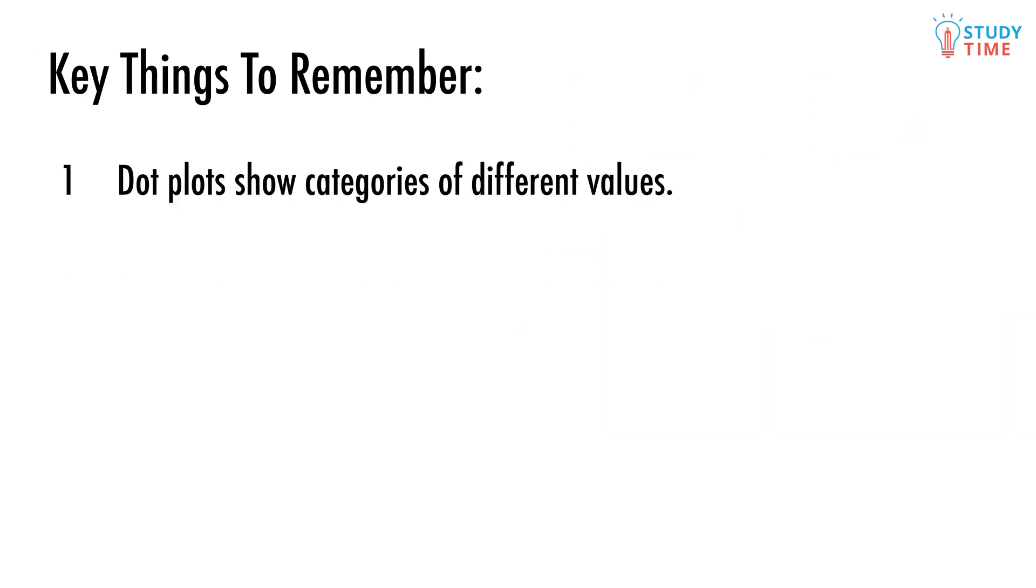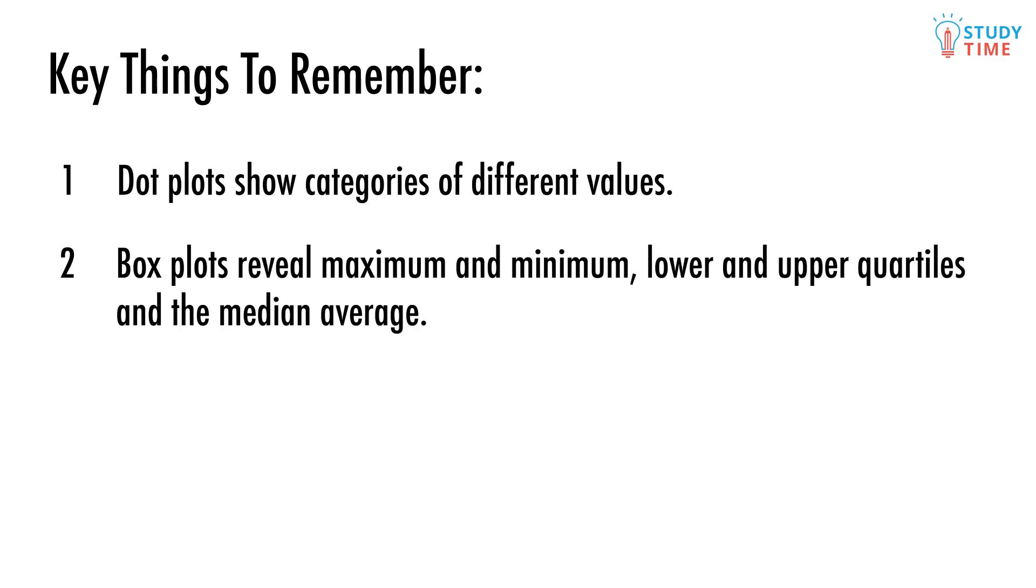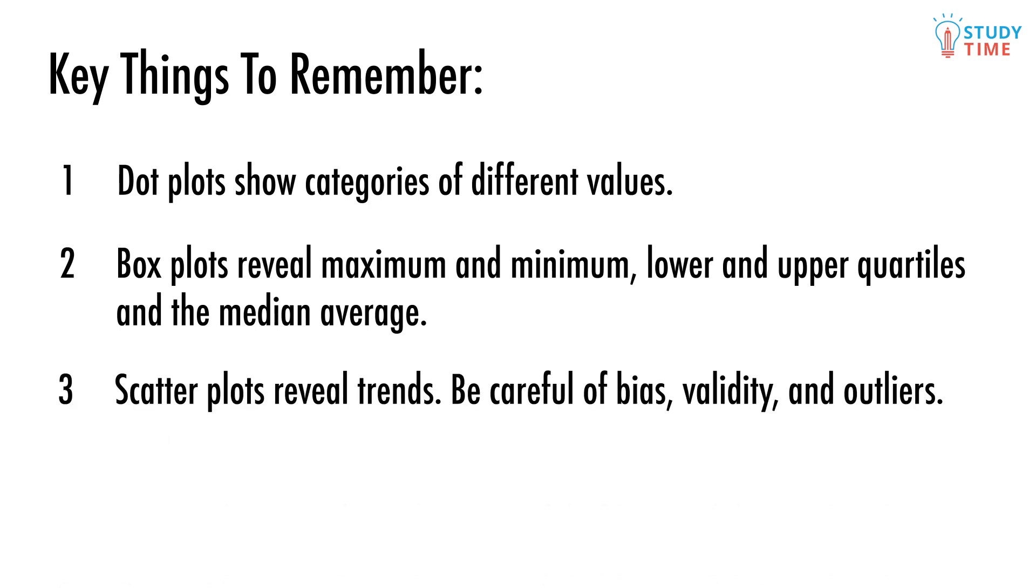Remember, dot plots show categories of different values. Box plots reveal maximum and minimum, lower and upper quartiles, and the median average. Scatter plots reveal trends. Be careful of bias, validity, and outliers.